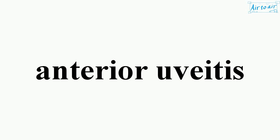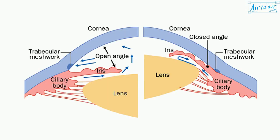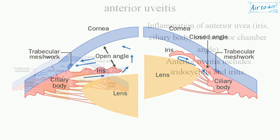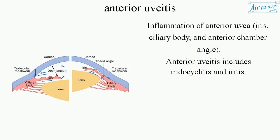Anterior uveitis is an inflammation of the anterior uvea, including the iris, ciliary body, and anterior chamber angle. Anterior uveitis includes iridocyclitis and iritis.